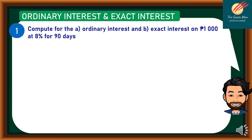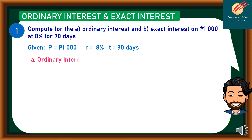Let's consider Problem number 1. Compute for the Ordinary Interest and Exact Interest on P1,000 at 8% for 90 days. First, let's identify the given: the Principal is P1,000, the Rate is 8%, and Time is equal to 90 days.